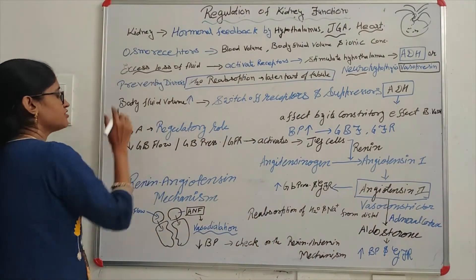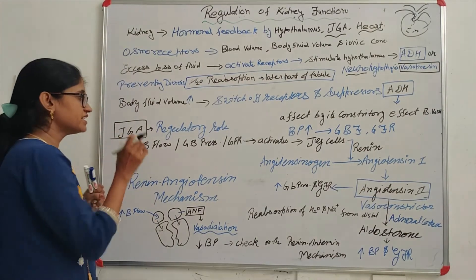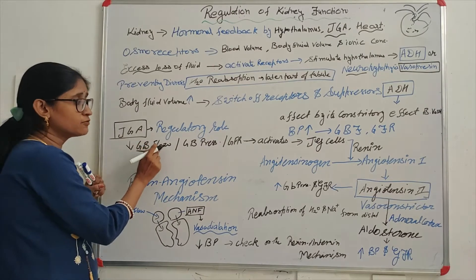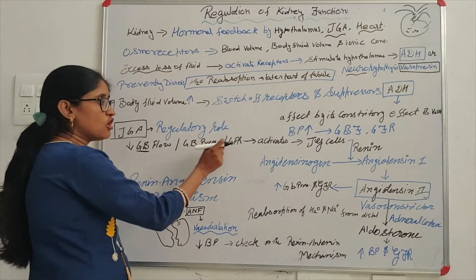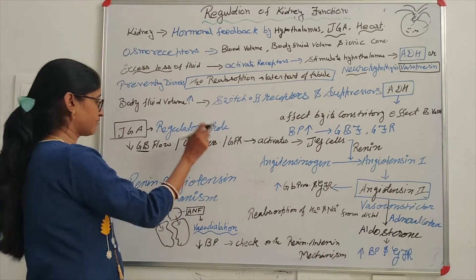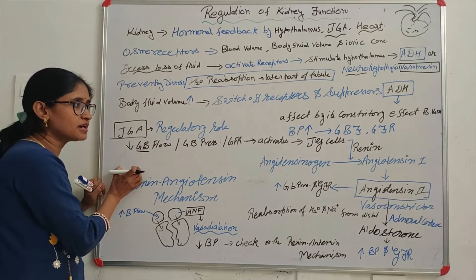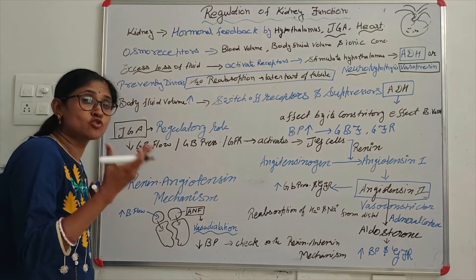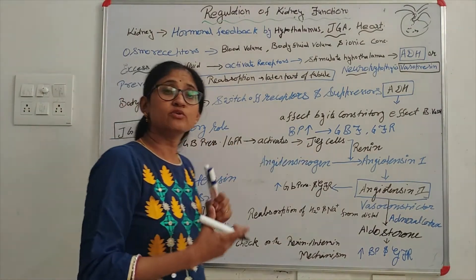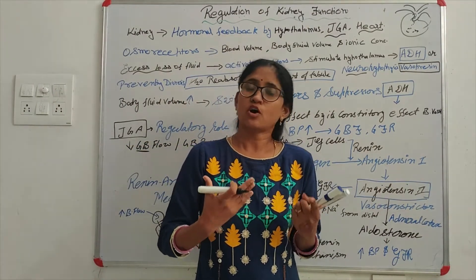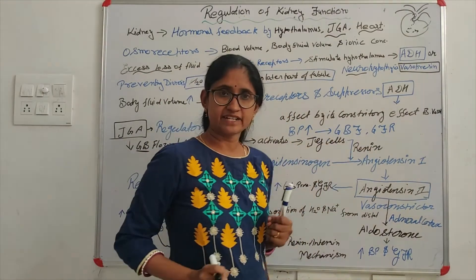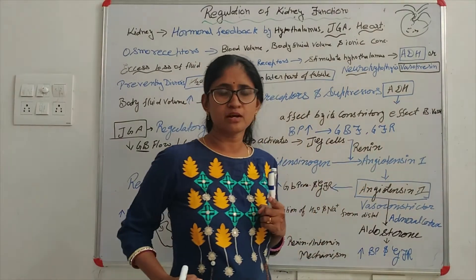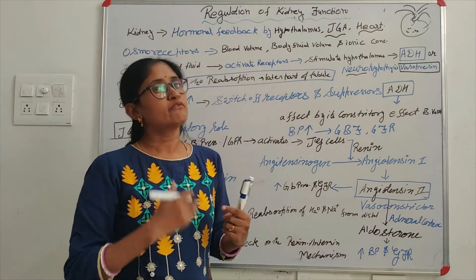Now the next thing is we will talk about the juxtaglomerular apparatus and its regulatory role. The juxtaglomerular apparatus tends to monitor glomerular blood flow, glomerular blood pressure, and glomerular fluid rate. If the blood flow or pressure is less — when the blood flow is less — it will activate the juxtaglomerular cells. The juxtaglomerular cells will be activated and will secrete renin.